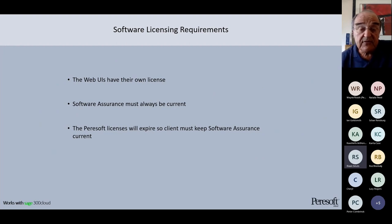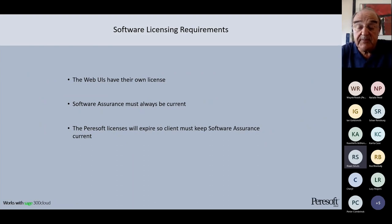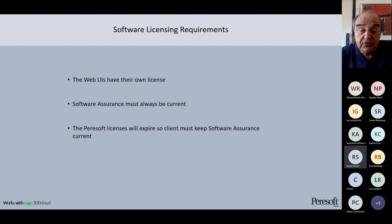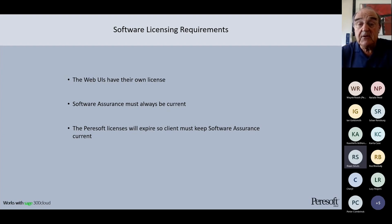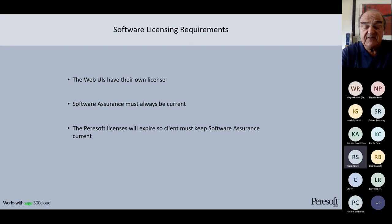Make sure your web browsers are up to date with the latest versions. The web UIs have their own license and your software assurance must be current — they expire the same way as your on-premise software assurance. We are looking at bringing in older versions with new features and supporting older versions of Sage 300 — still discussing how far back to go, perhaps 2018 and 2019. We might create a poll asking whether dealers want Perisoft to recompile older versions.